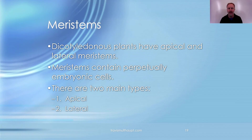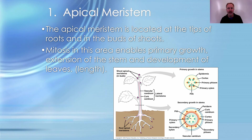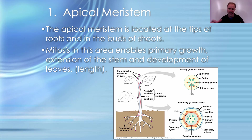Meristematic tissue is perpetually embryonic — it can continually give rise to new cell types. Recall the onion lab where we exposed the root tip cells — those were meristematic cells. There are two types of meristems: apical and lateral. Apical meristems are at the tips of roots and shoots; that's where we looked for mitosis in the onion root prep. Mitosis in these locations enables primary growth — the elongation of roots, shoots, and leaves.